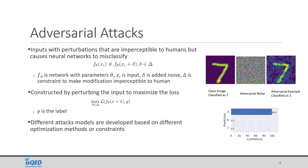Adversarial attacks are inputs with carefully constructed perturbations that force deep neural networks to produce incorrect results. These perturbations are usually made imperceptible to humans by constraining them within some bounds. These bounds can include the number of pixels modified, the amount of modification to each pixel, and the distance from the original image.